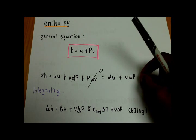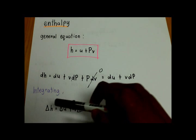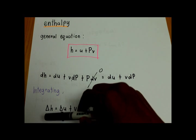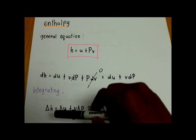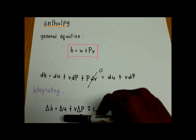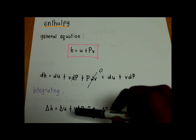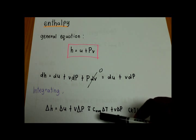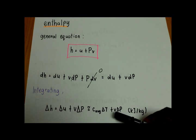When we take the integration of this equation, we get delta h for the change of enthalpy, and it is equal to the change in internal energy plus v delta P. The formula for internal energy is included, plus v delta P.